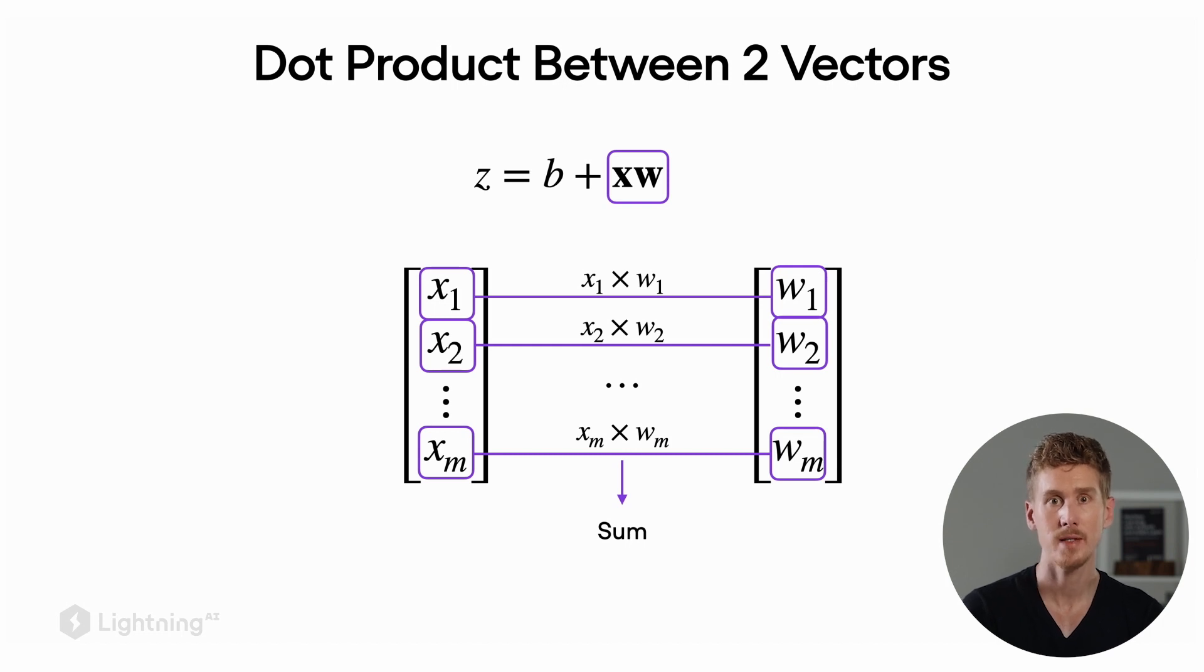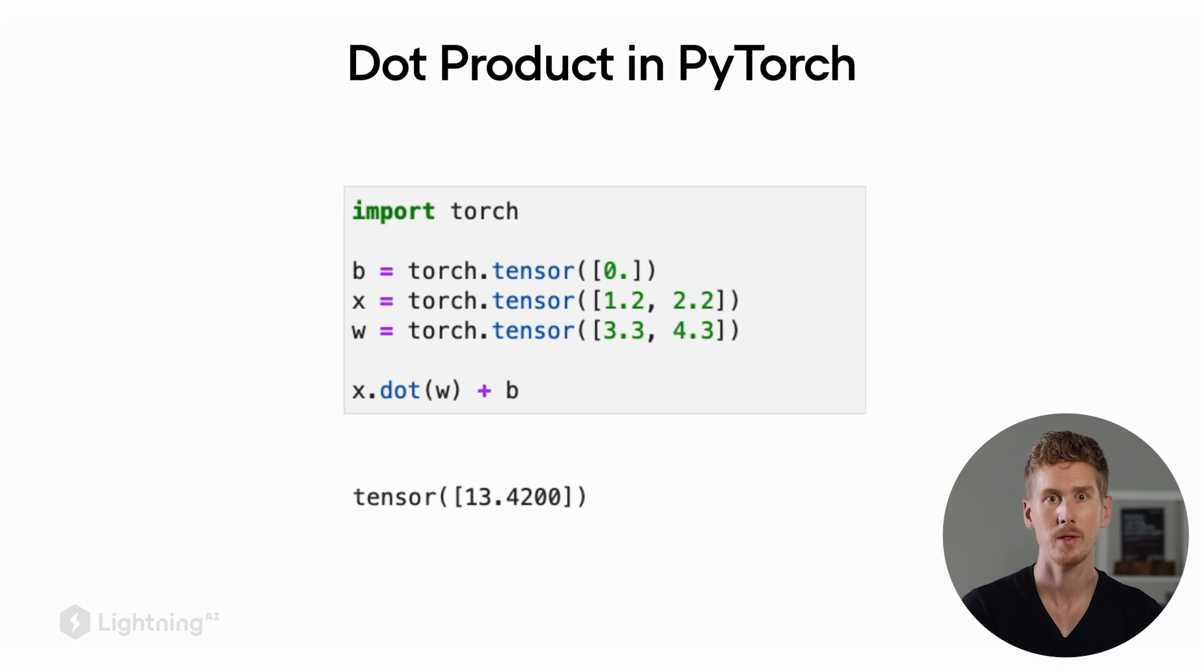Now in order to compute the weighted sum of the perceptron in PyTorch, we can use the dot method to compute the dot product between x and w and then add the bias unit to it. And you can see this is much more compact than our for loop in Python.